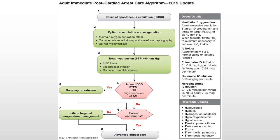So we have return of spontaneous circulation, also known as ROSC. We want to optimize ventilation and oxygenation. We want to make sure that this patient has, if they need one, an advanced airway, that we maintain oxygen saturations of greater than 94% — that's the number the American Heart Association likes. And we don't want to hyperventilate. We want to treat hypotension.